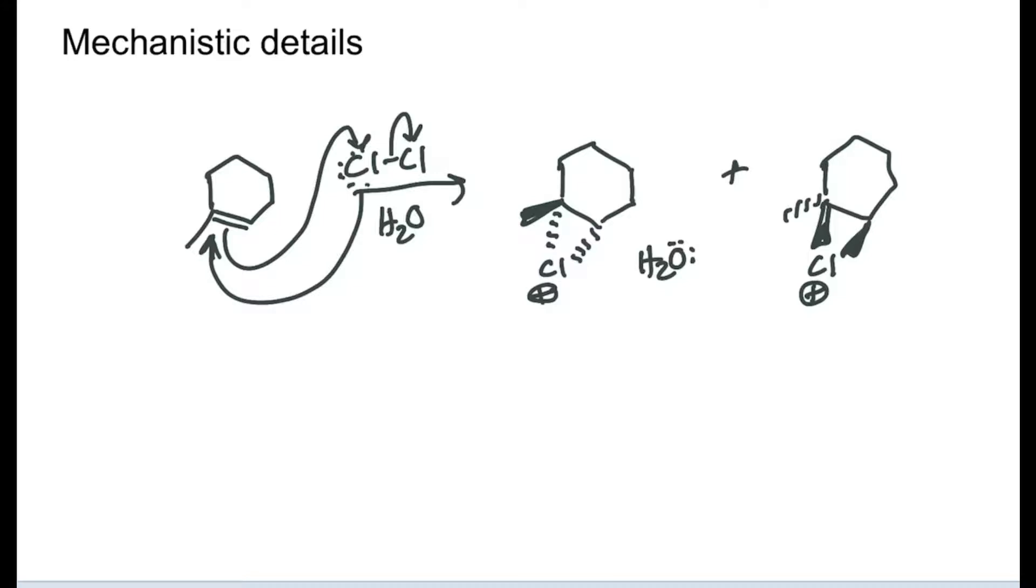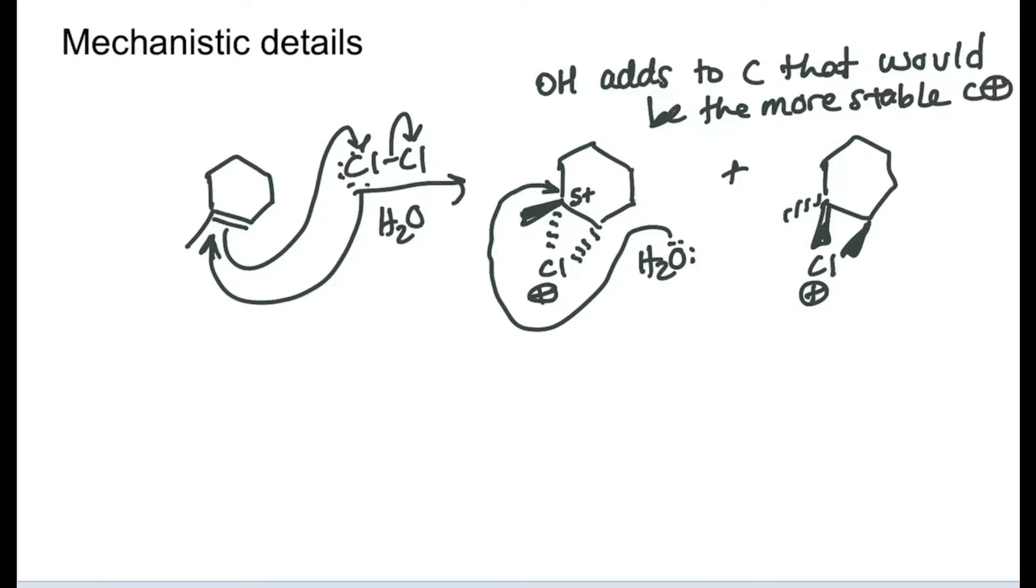We have water in here and so water is going to be quicker, faster than that other chloride, and it's going to come in and attack at the carbon atom that's more substituted. That's the carbon that in this chloronium bears more positive character because if it could be a carbocation it would be the more stable one, the more substituted one. So OH adds to the carbon that would be the more stable carbocation even though a carbocation doesn't form.